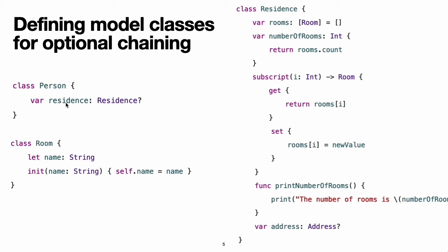These classes expand upon the person and residence model from above by adding a room and an address class with associated properties, methods, and subscripts. The person class is defined in the same way as before. The residence class is more complex than before. This time, the residence class defines a variable property called rooms, which is initialized with an empty array of type array of room. Because this version of residence stores an array of room instances, its number of rooms property is implemented as a computed property, not a stored property.